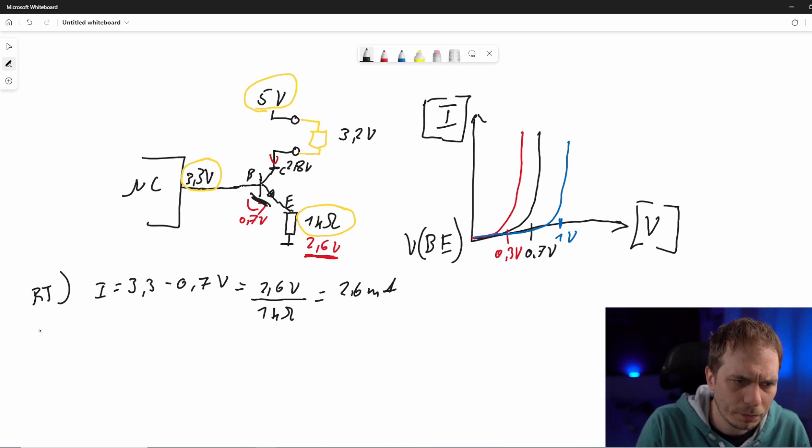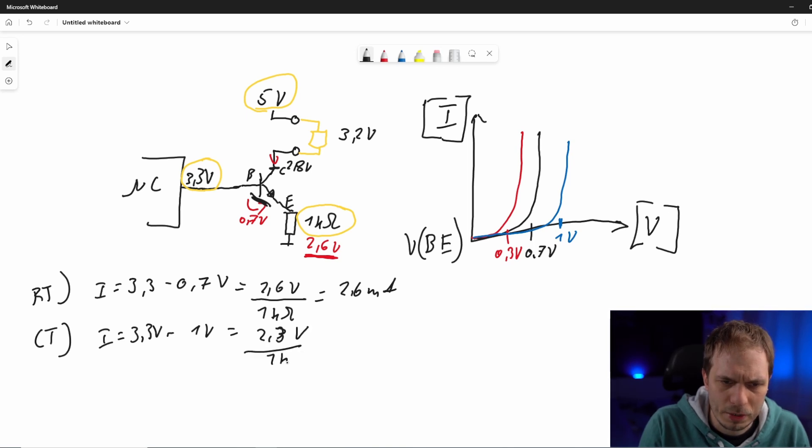Fine. Let's check it at cold temperature. It's the same here with the calculation, but I have now just 3.3 volts, and now for cold I have around 1 volt where we estimated. Then we have 2.3 volts, again 1 kilo-ohm, and this is meaning we have 2.3 milliamps.